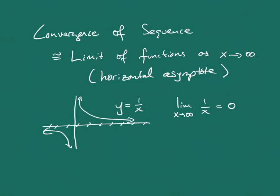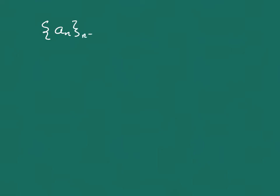The same is going to be true when we talk about convergence of sequences — it will be pretty similar to that. So let's look at an honest-to-true definition of a convergent sequence. Suppose that somebody gives us a sequence a_n, for n going from 1 up to infinity. So we imagine this as a_1, a_2, a_3, and so on, going on forever.